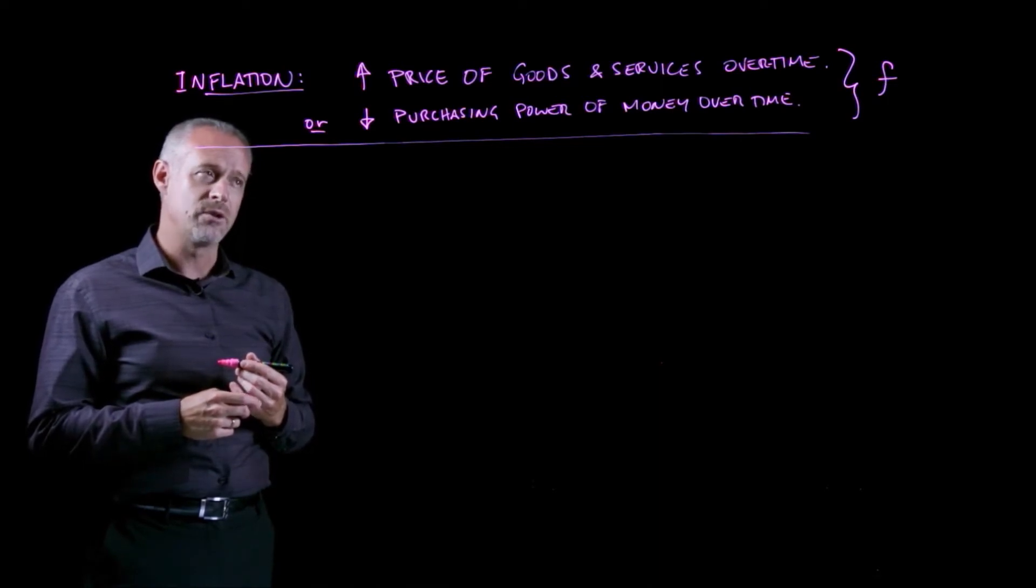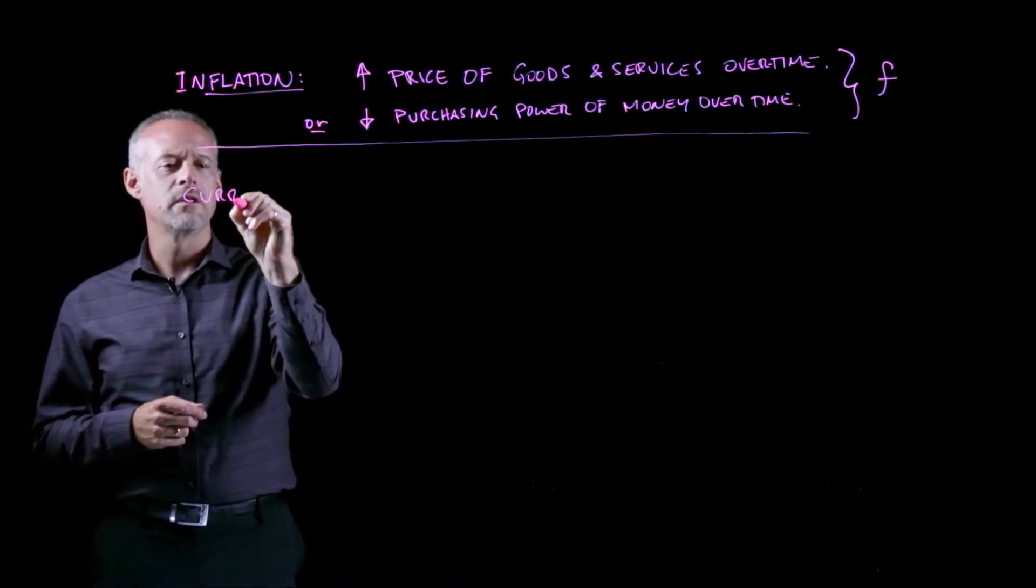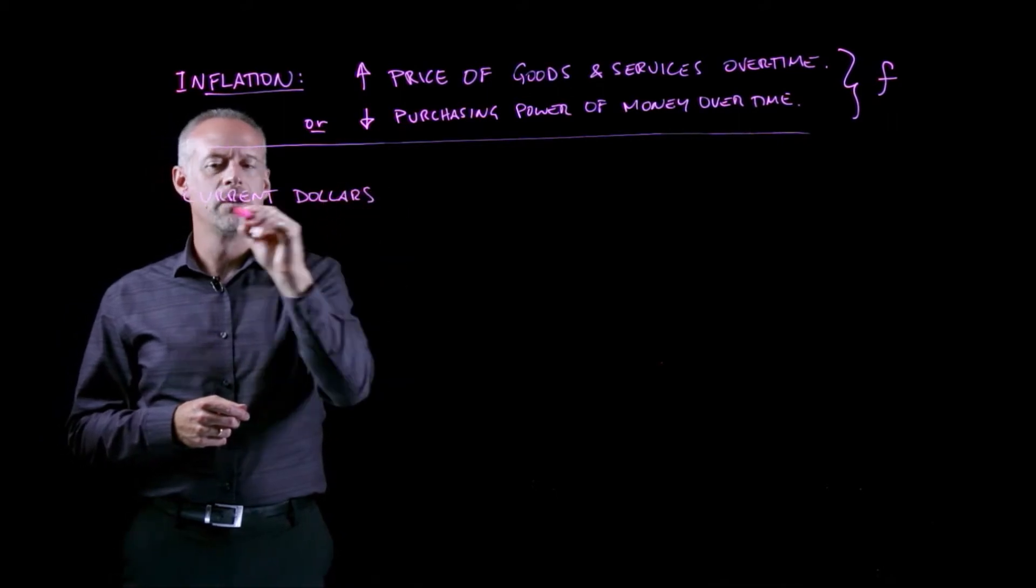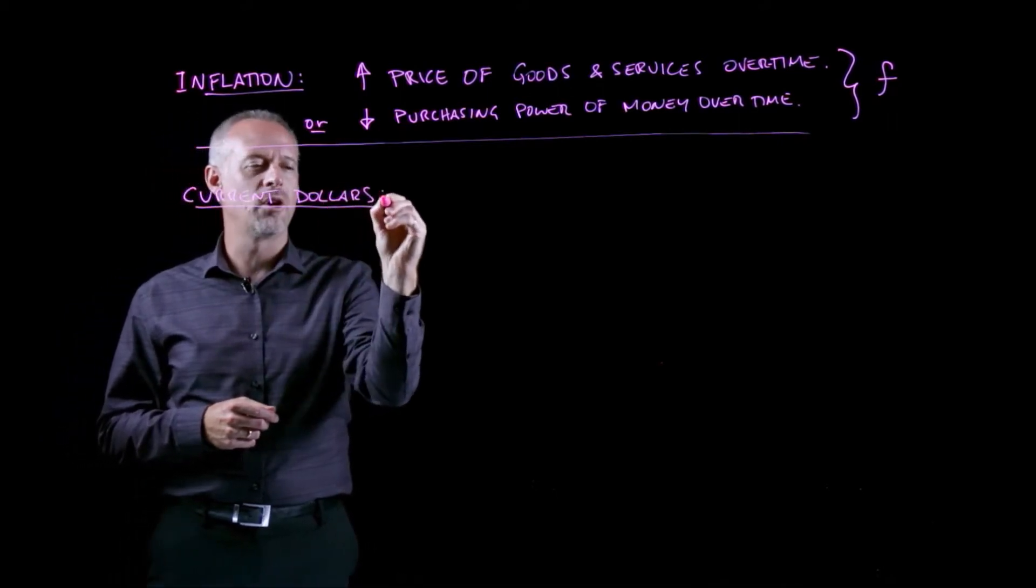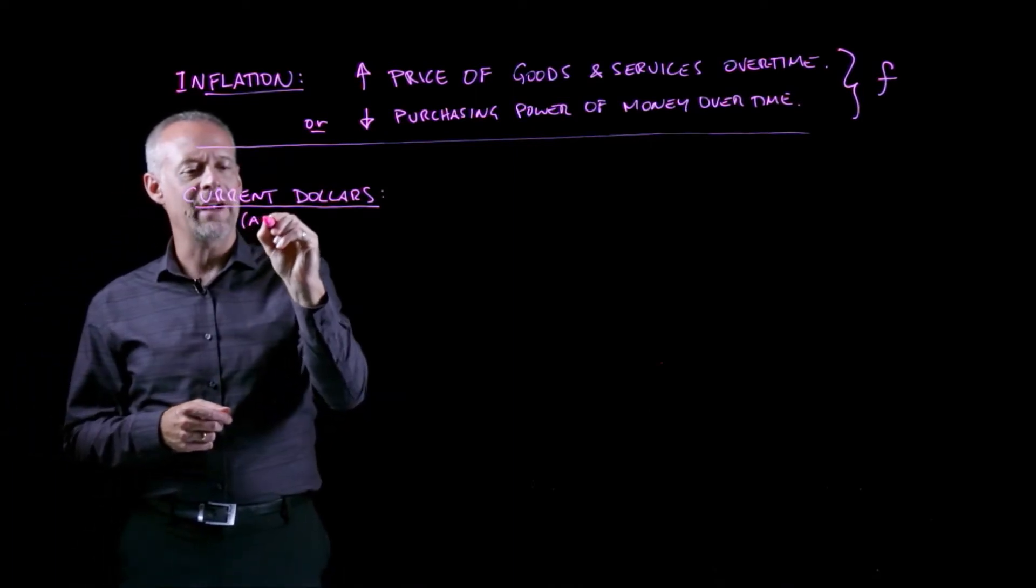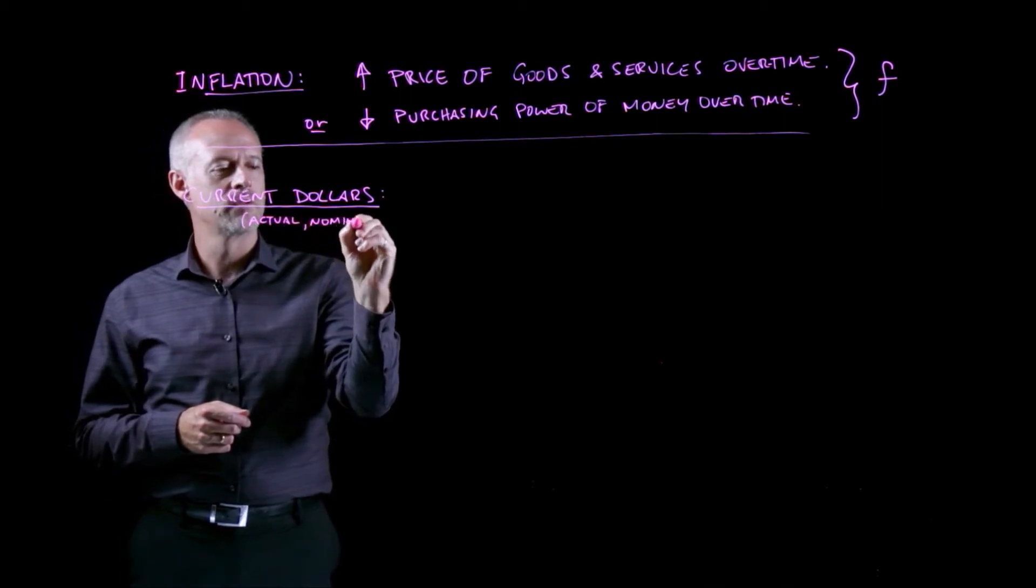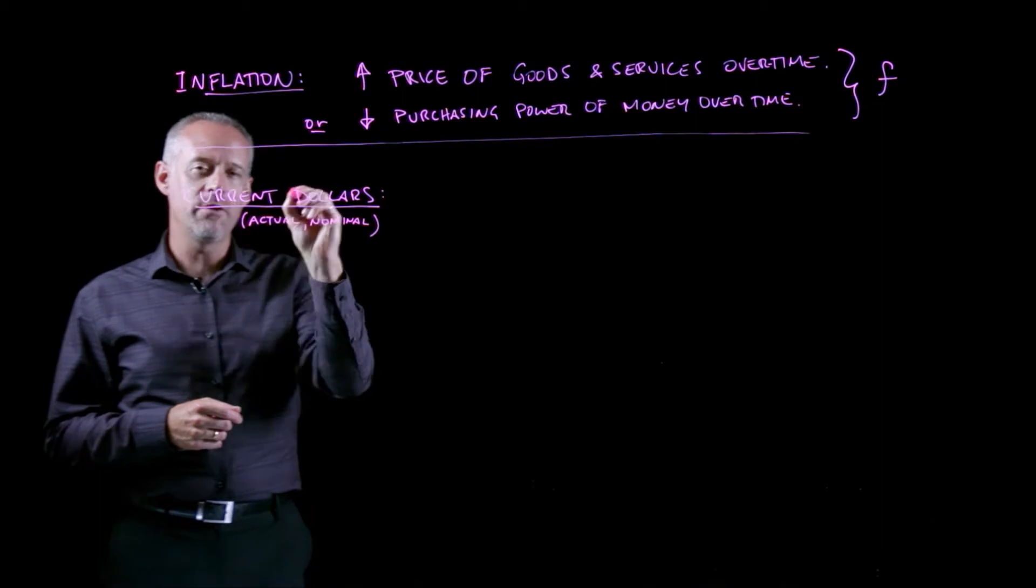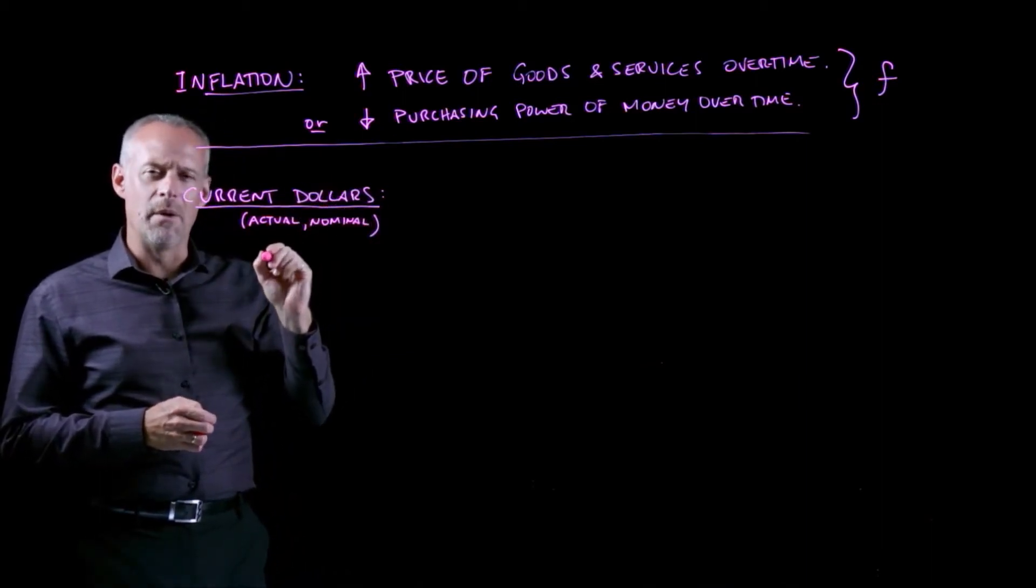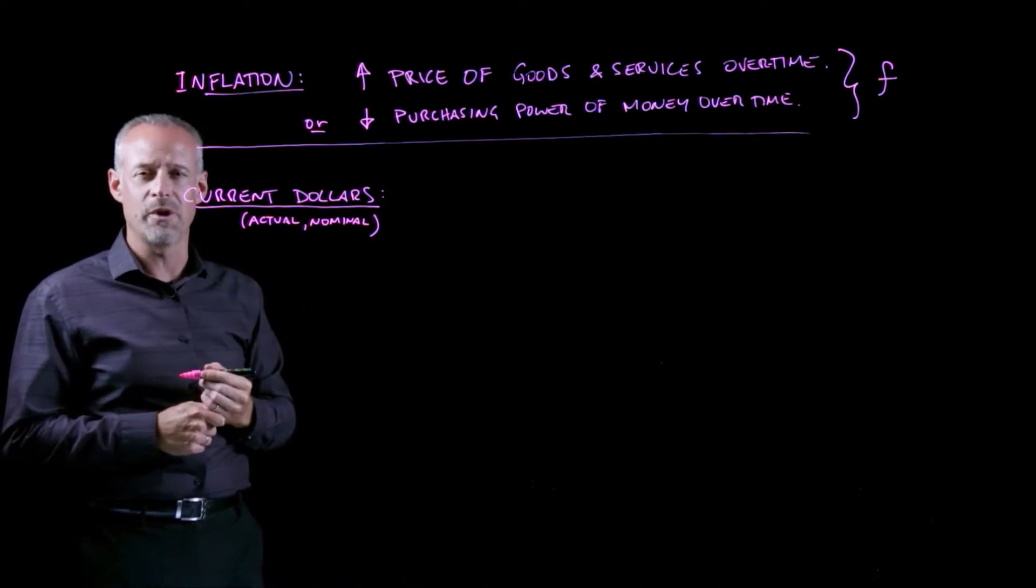The first term I'd like to introduce is something called current dollars. In some texts, they're called actual dollars or nominal dollars. But in general, current dollars are the amount of money you can imagine you take out of your wallet at a certain point in time.